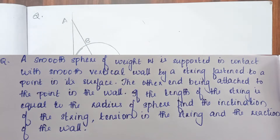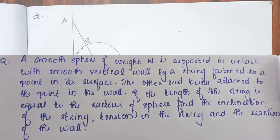A smooth sphere of weight W is supported in contact with a smooth vertical wall by a string fastened to a point on its surface, the other end being attached to a point on the wall. If the length of the string is equal to the radius of the sphere, find the inclination of the string, tension in the string, and the reaction of the wall.